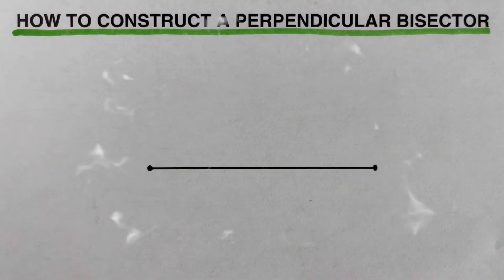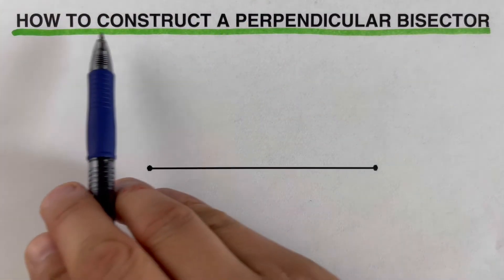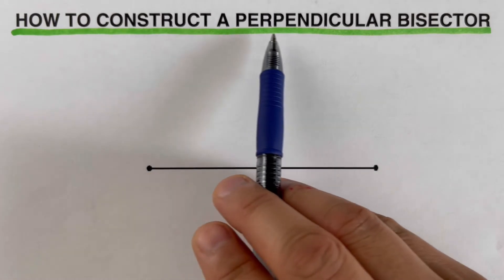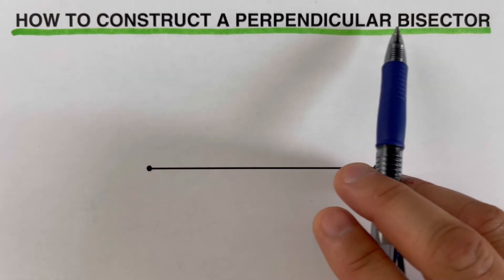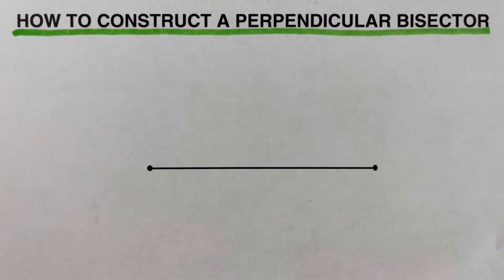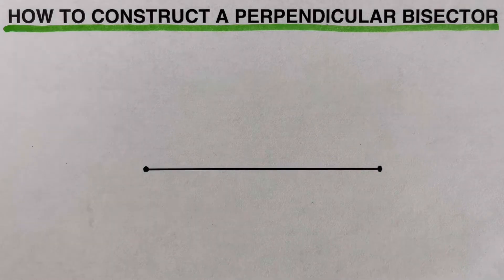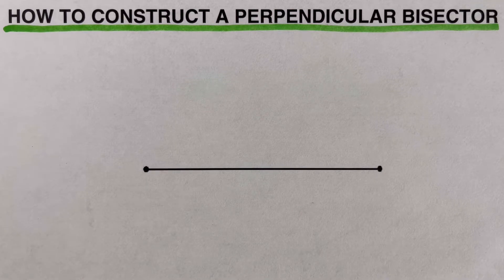Hello everyone! In this video, I'm going to show you how to construct a perpendicular bisector using a compass and a straight edge — in this case, we're going to use a ruler. But before we go over the steps, let's define perpendicular bisector first.